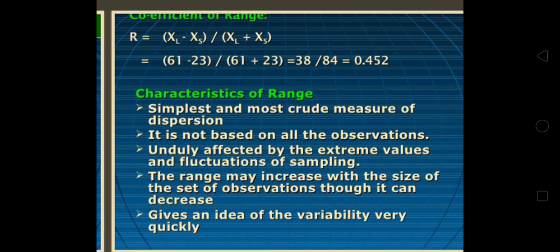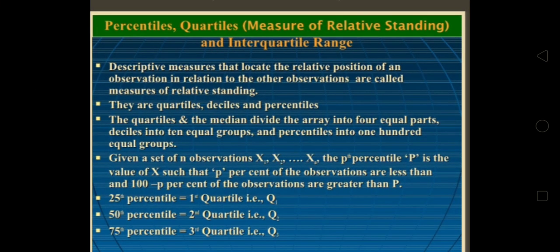Percentiles, quartiles, or interquartile range is another method. 25th percentile means first quartile Q1, 50th percentile is second quartile Q2, and 75th percentile is third quartile Q3. In this method we apply the quartiles Q1, Q2, Q3.